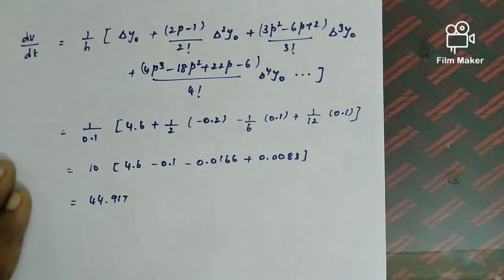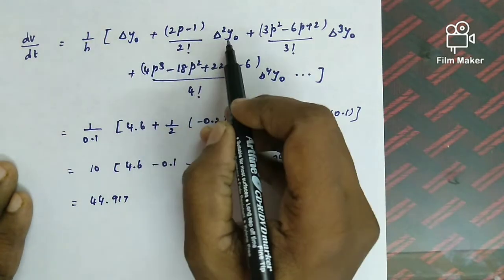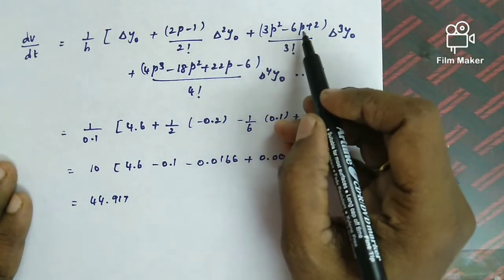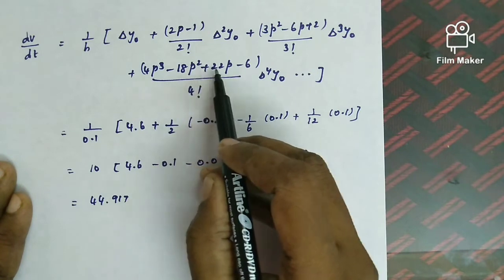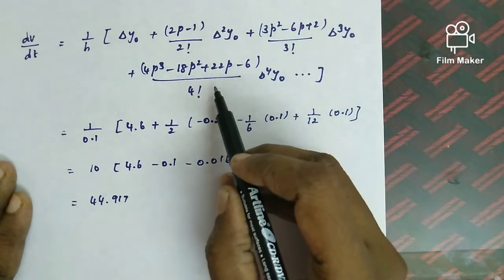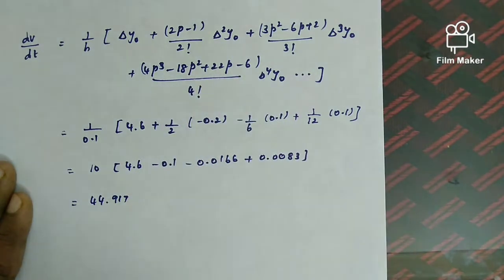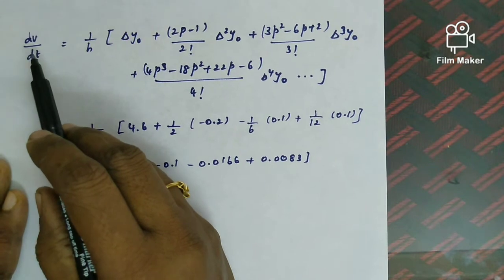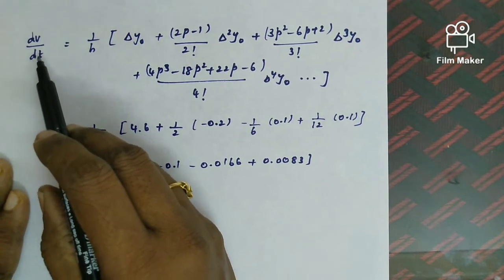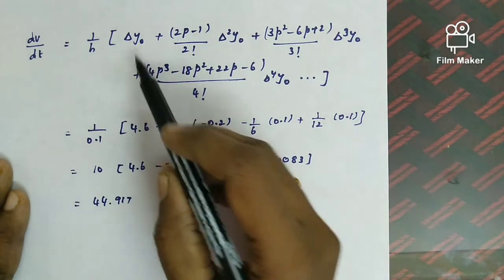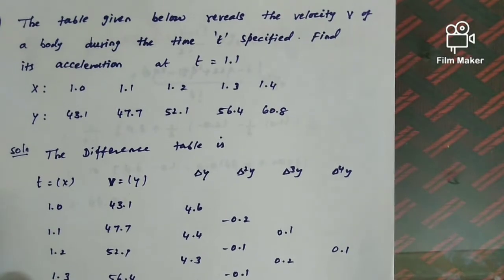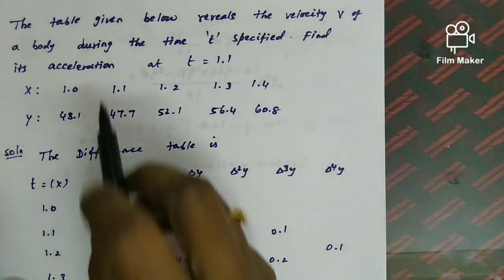So dv/dt uses the Newton's forward difference formula: dv/dt = (1/h)[Δy₀ + ((2p−1)/2!)Δ²y₀ + ...]. Substituting h, Δy₀, Δ²y₀, Δ³y₀, Δ⁴y₀ values gives dv/dt = 44.917. The acceleration at time t = 1.1 is 44.917.